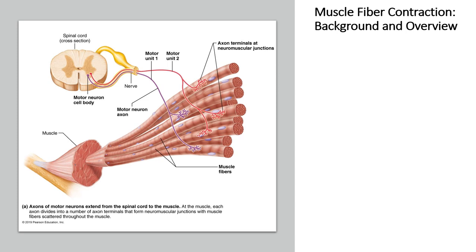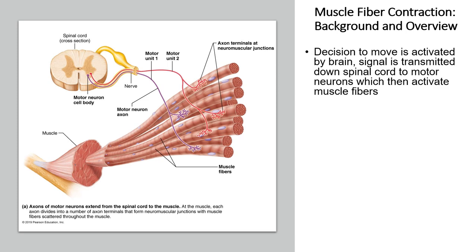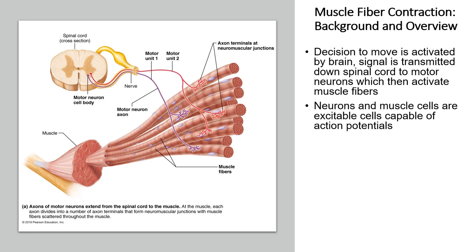Now we need to take a step back and talk about how this contraction process begins — it begins with a neural impulse. When there's a decision to move in skeletal muscles, which are conscious decisions, signals from the brain are transmitted down through the spinal cord and then from the spinal cord to the muscles through motor neurons. Motor neurons are specific neurons that activate muscle fibers. Neurons and muscle cells are capable of becoming excited, and excitation is going to cause the contraction to happen by having action potentials.